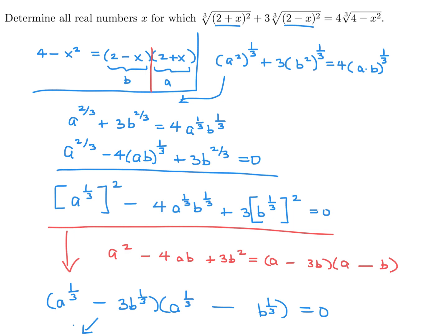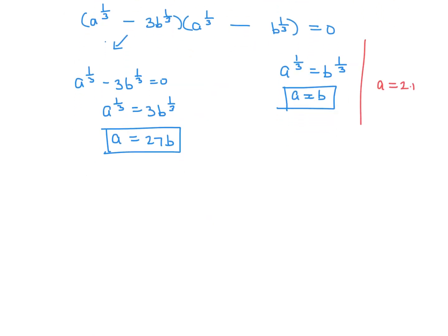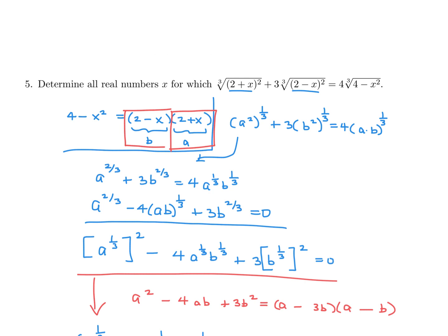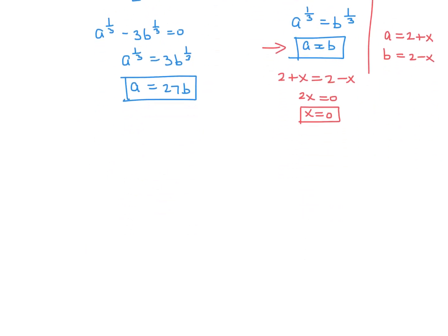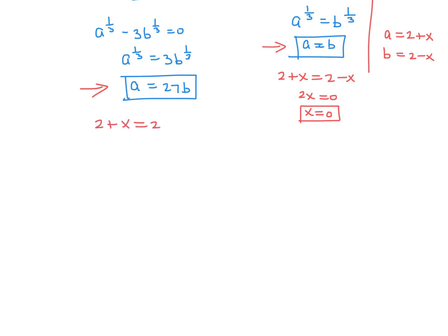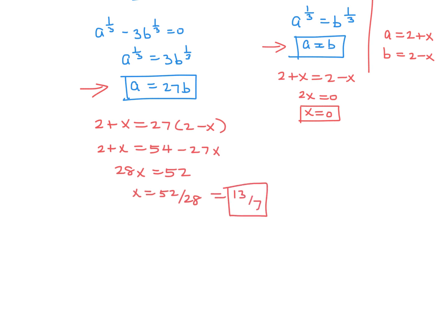Going back to my substitutions: a = 2 + x and b = 2 − x. For the first case, a = b means 2 + x = 2 − x, so 2x = 0, giving x = 0. For the second case, a = 27b means 2 + x = 27(2 − x) = 54 − 27x, so 28x = 52, and therefore x = 52/28 = 13/7. Those are the two solutions for x.